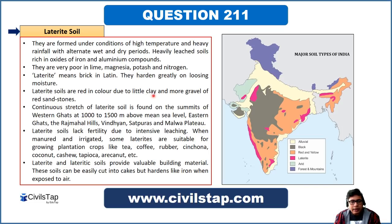Laterite soils are red in colour due to very little clay and more gravel of red sandstones. A continuous stretch of laterite soil is found on the summits of the Western Ghats at 1,000 to 1,500 metres above sea level, Eastern Ghats, Rajmahal Hills, Vindhyas, Satpuras, and the Malwa Plateau. As seen on the map, the dark pink colour signifies laterite soils found in stretches of Peninsular India, the northeastern part, and parts of Rajasthan.